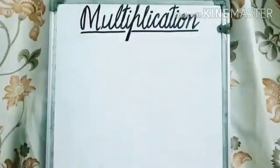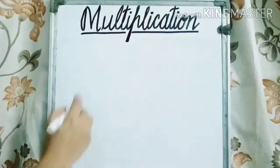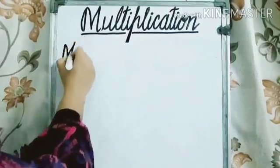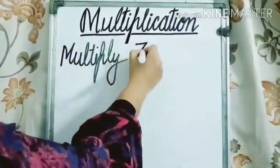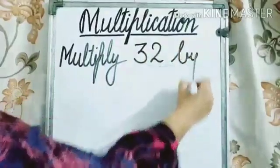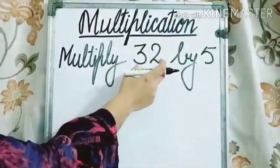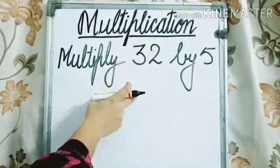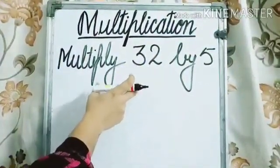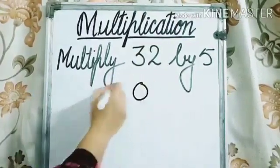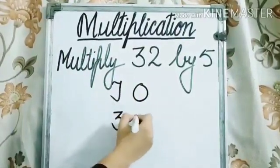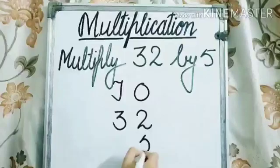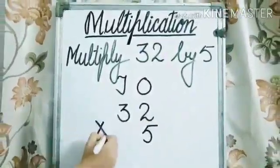Students, let's understand the other example. Multiply 32 by 5. So first of all, arrange this number under 1's and 10's column. We need to write down the heading first. 1's, 10's. Now write down 32 multiply by 5. Put the symbol of multiplication.